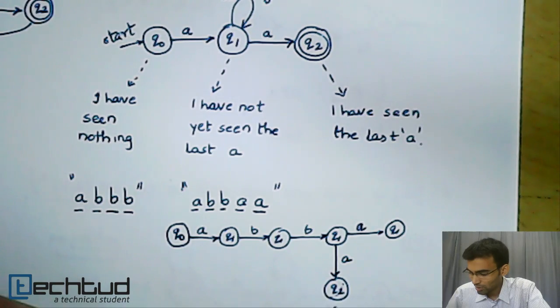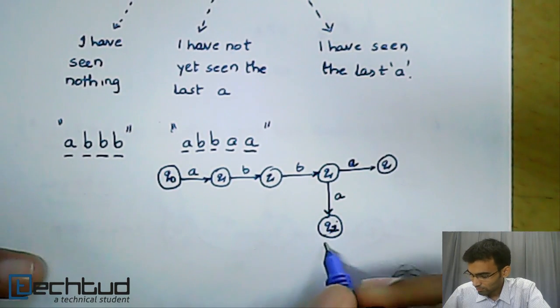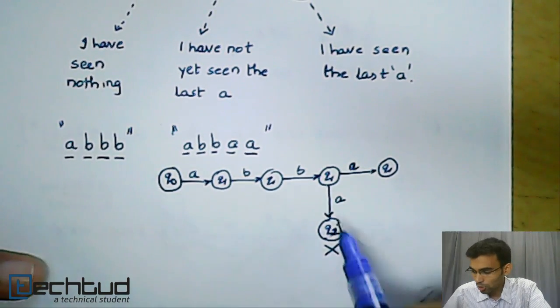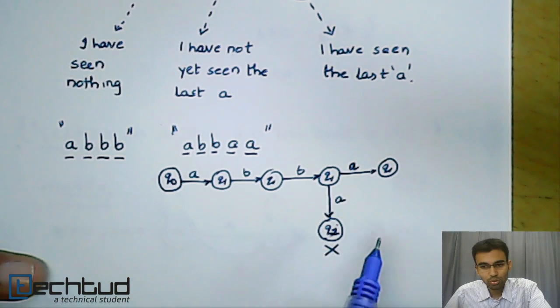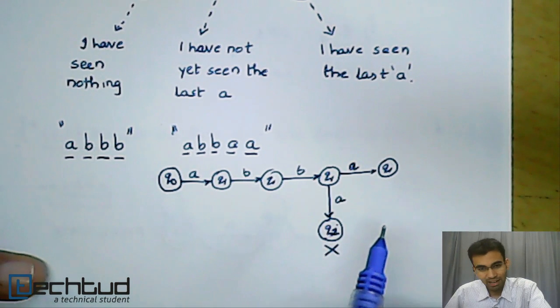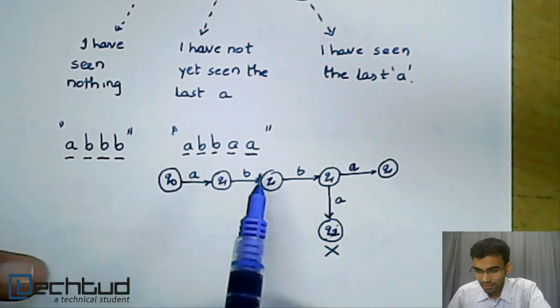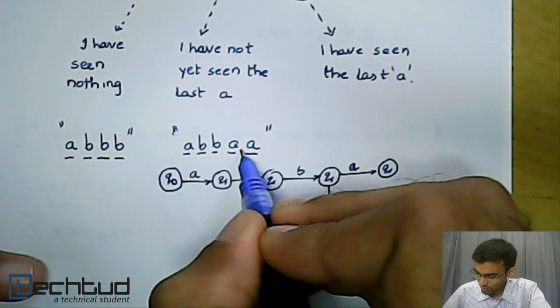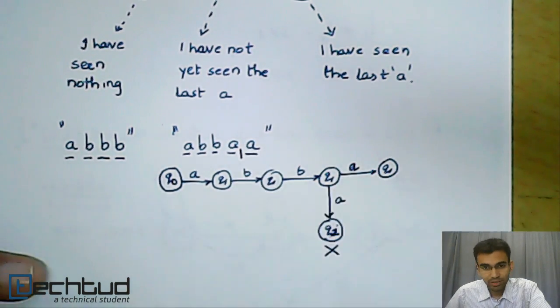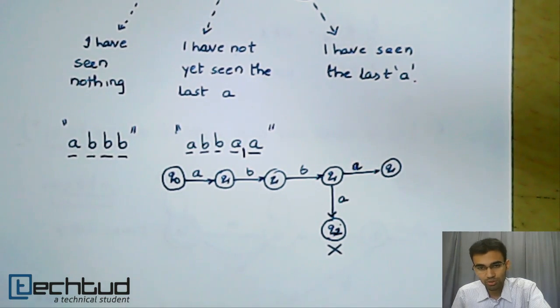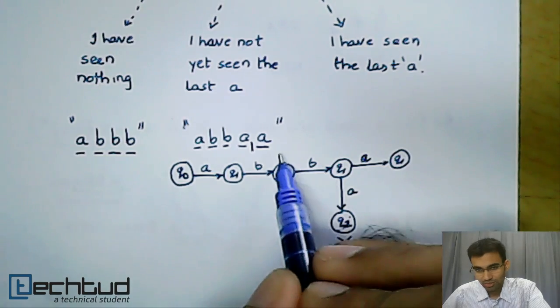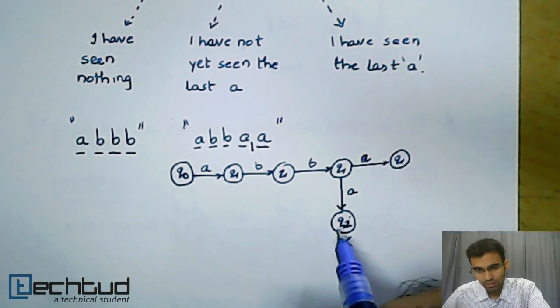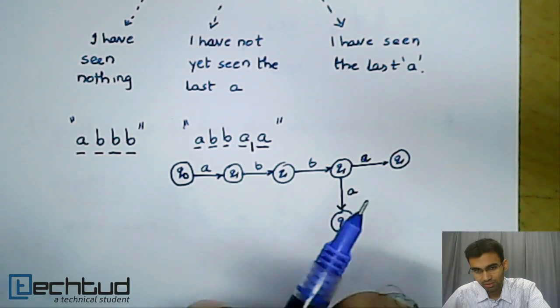This last A for this particular branch, Q2, will terminate. Although Q2 is a final state, we do not care whether Q2 is a final state until we have completed the entire string. When we are at Q2 at this point, we are not interested whether Q2 is a final state or not. Because Q2 does not have any transition on the last A, this particular search fails.